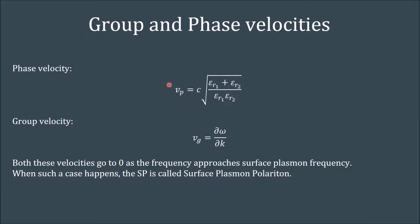Now let's analyze the group and phase velocities for a surface plasmon. The expression for phase velocity is vp equals ω by k. By putting the values, we get this expression. Both these velocities go to zero as the frequency approaches ωsp. This case is called surface plasmon polariton and the surface plasmon created is stationary.